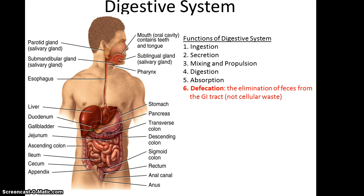And then defecation, which is the elimination of feces from the GI tract. It's worth noting that very little to no cellular waste from our bodies is included in the feces — it's primarily whatever we don't digest, plus the bacteria that live in our gut, plus any wastes they produce.